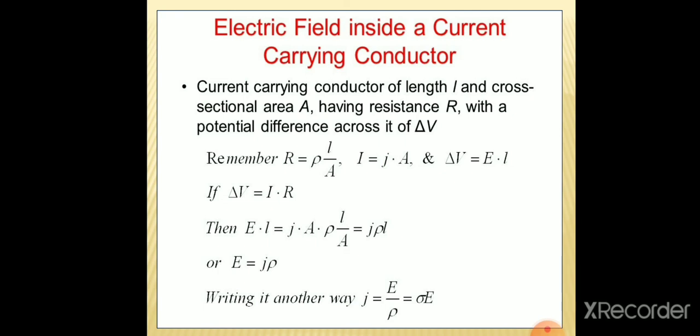Also, from Ohm's law, V is equivalent to I R. Substituting the expressions, we get E into L is equivalent to J into A into rho L by A. Cancelling A, we get E into L is equivalent to J into rho L. Cancelling L on both sides, we get E is equivalent to J rho.